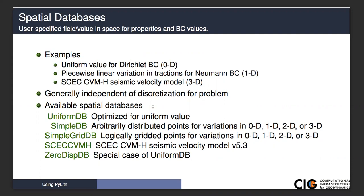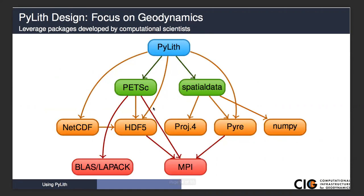The SCEC velocity model is another spatial database. Then we have a specialized spatial database when we want to specify zero displacement boundary conditions. We use this often enough that instead of even specifying a uniform database with zero values, the default is a zero displacement database for Dirichlet boundary conditions. So you don't even have to specify that it's zero. It's just zero by default.